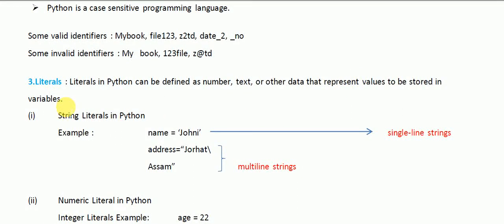The things which are stored in a variable are known as literals. For example, you can write 'a = 2', or you can assign a string in double quotes. Anything — any value that you can store — is known as a literal. The first type of literal is a string literal.